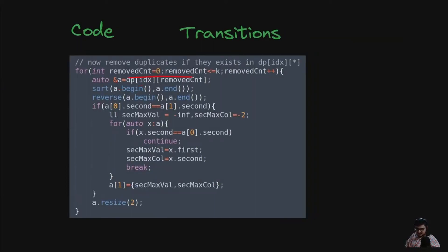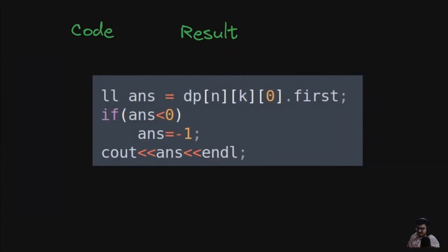After merging transitions, we may have up to 3 elements (with possible duplicates) in dp[idx][remove_count]. We sort in decreasing order, and if the first and second values are equal, we find the first element whose color differs from the first element's color and assign it as a1. Then we resize each DP value to a vector of size 2. For the final result, we look at the max value for dp[n][k]; if less than zero, output -1, otherwise output the answer.